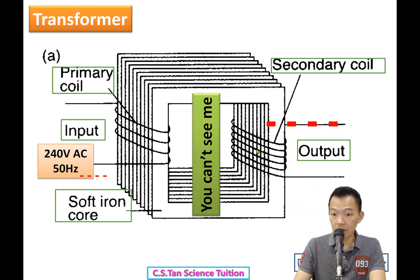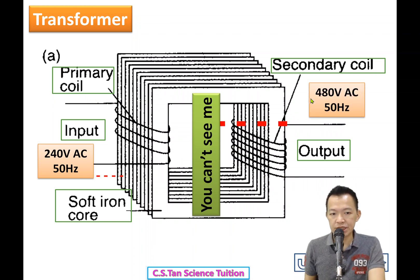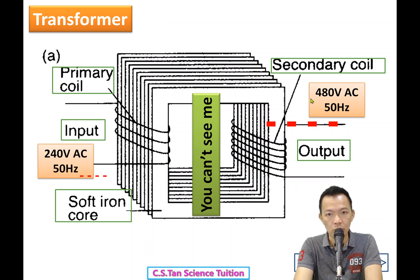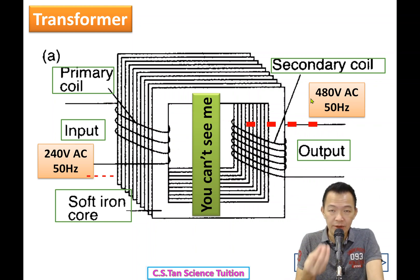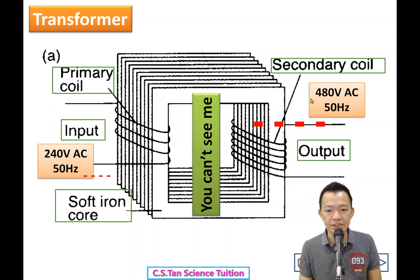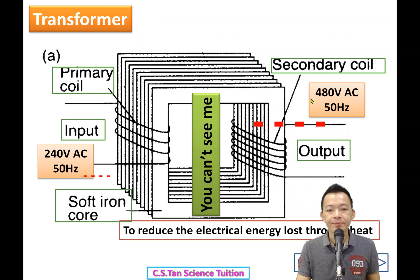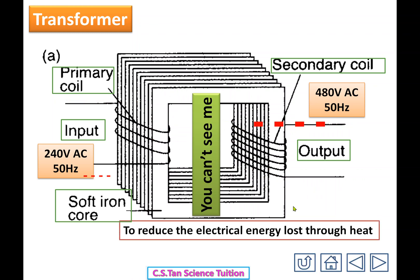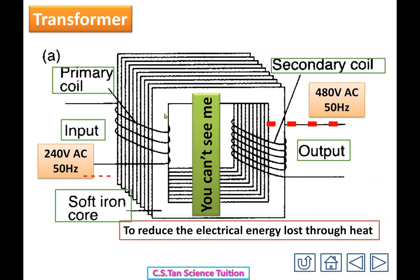Because the secondary coil has more wire turns, the induced voltage is stepped up — for example from 240V to 480V. The soft iron core also helps reduce energy loss through heat. (The detailed theory of eddy currents and heat loss will be covered in Physics Form 4/Form 5.)